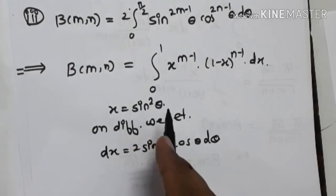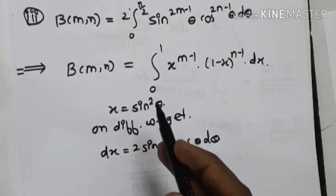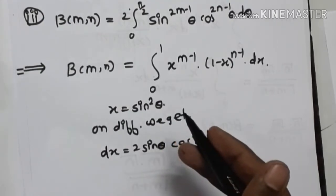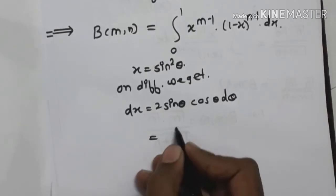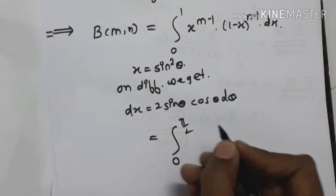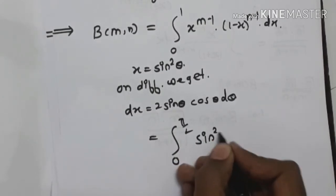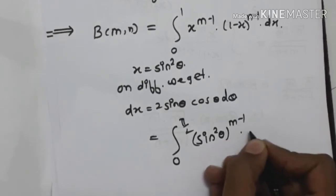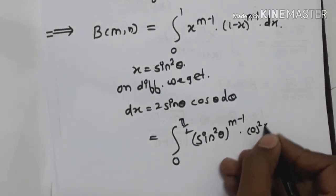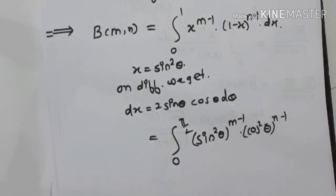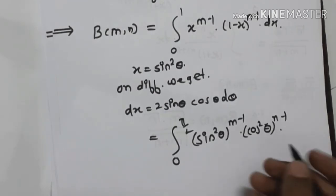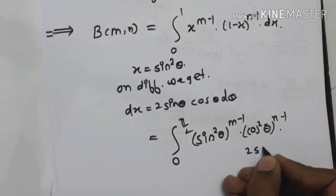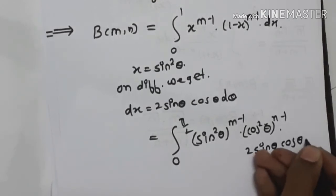On differentiating x equals sin squared theta, we get dx equal to 2 sin theta cos theta d theta. When x equals 0, theta equals 0, and when x equals 1, theta equals pi by 2. Substituting these limits and the values of x and dx into the integral from 0 to pi by 2: x becomes sin squared theta raised to m minus 1, and 1 minus sin squared theta is cos squared theta raised to n minus 1, and dx is 2 sin theta cos theta d theta.